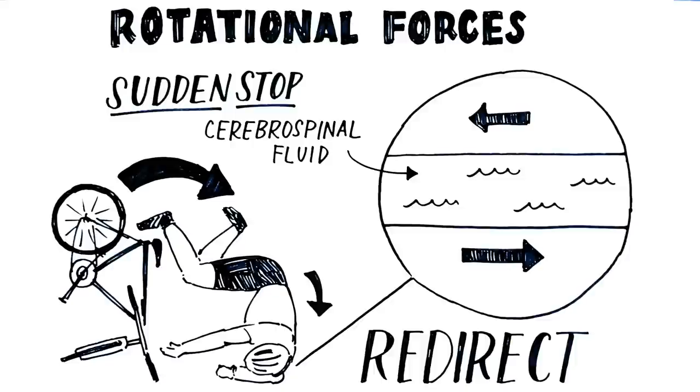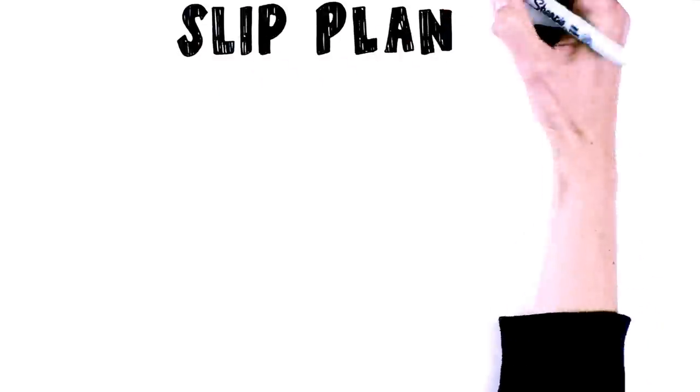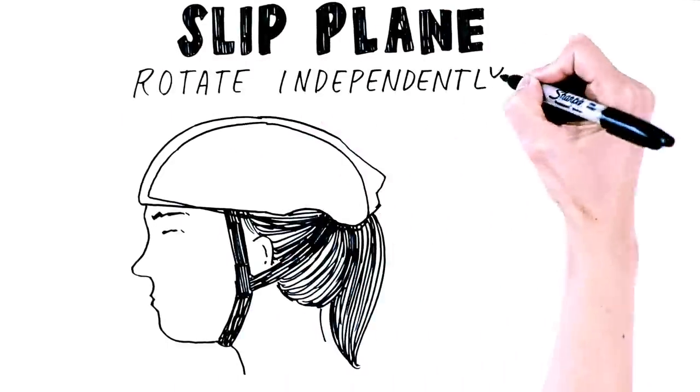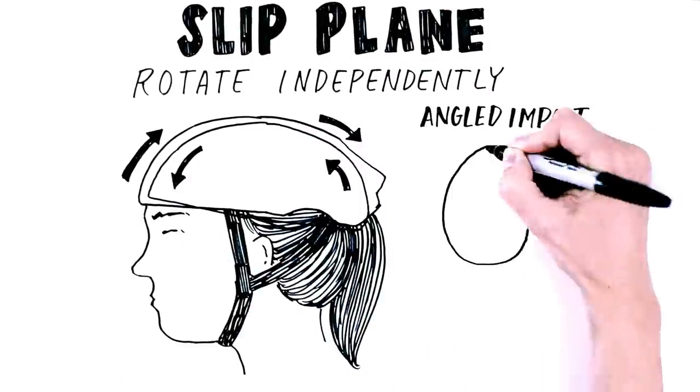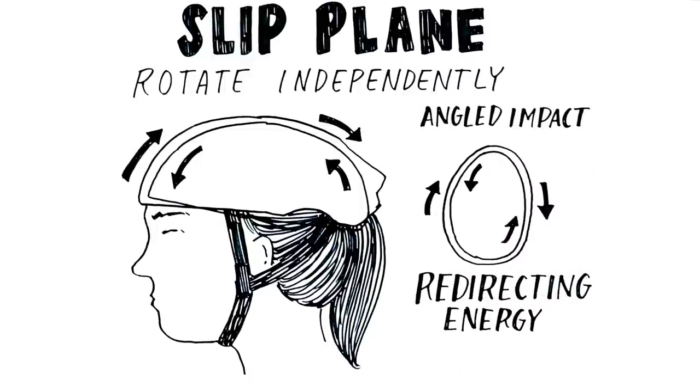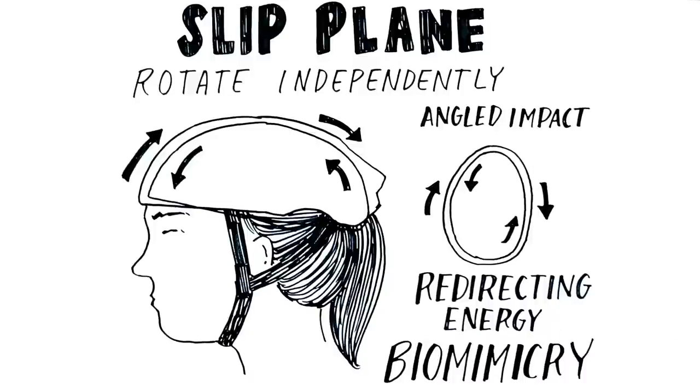New helmet technologies, such as slip planes, work in a similar fashion. A slip plane is an extra liner within the helmet that allows the helmet shell to rotate independently around the head during an angled impact, thereby redirecting some of the energy your brain might otherwise experience. It is biomimicry, with the slip plane mimicking cerebrospinal fluid.